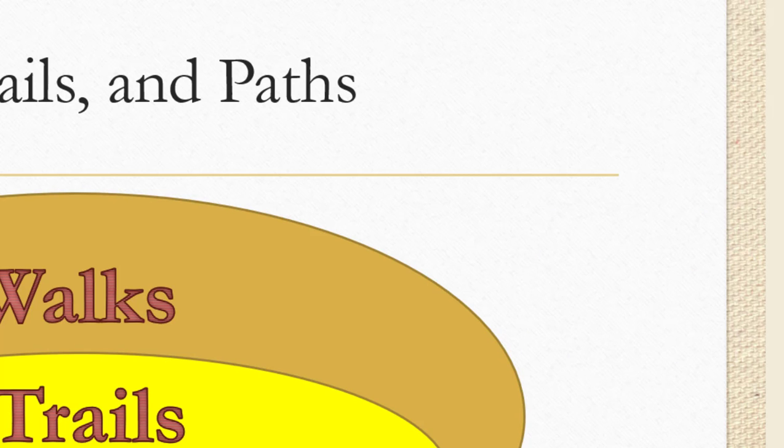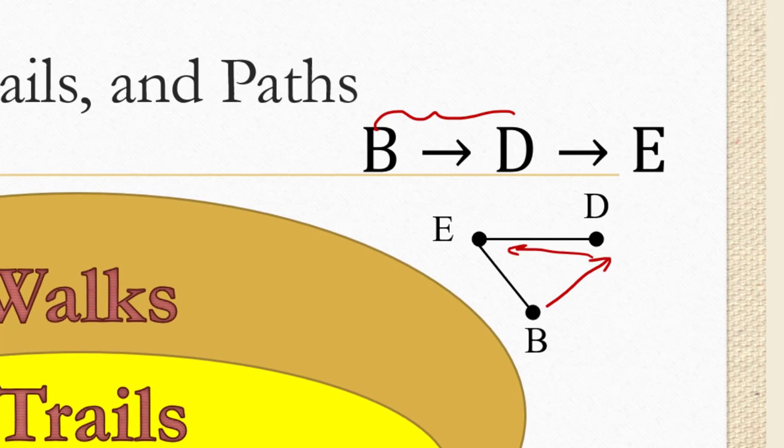So if I give you a list of sequences, I need you to be able to determine if it's a walk, a trail, a path, or more than one of them. Well, the first thing you want to check is to see if it's a walk. You make sure that there aren't any edges or vertices listed in your sequence of edges that aren't actually on the graph.